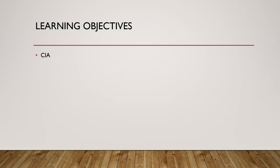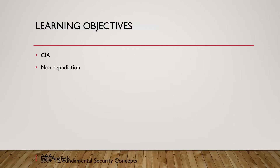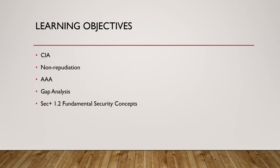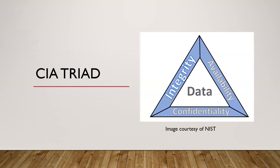It's kind of interesting how CompTIA wraps some of these things into the same exam objective topic area, but we'll talk about all of them in this video. So again: CIA triad — confidentiality, integrity, and availability — non-repudiation, Triple A, and gap analysis. Let's dive right in and talk about the CIA triad.